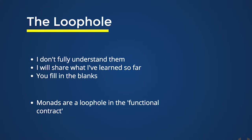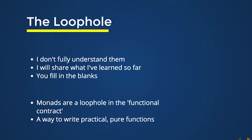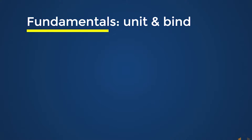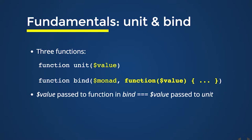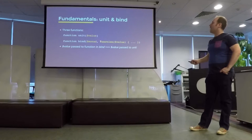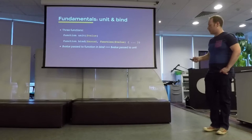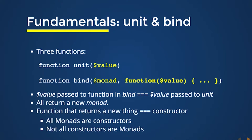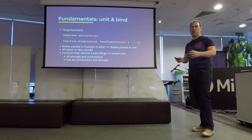It's interesting that I found this loophole because Monads are themselves a loophole in the whole idea of a functional contract. They give you a way to write pure functions that are able to talk to the real world and have some practical benefit. Monads essentially begin with the idea of three fundamental functions: there is a unit function, there is a bind function, and then there is a function that is passed as an argument to bind. If we call the unit function on some value, that creates a Monad. We can then call bind on that Monad with some other function, and all three of these functions return a new Monad. Any function that returns a new thing is generally considered a constructor, so we can reason that all Monads are constructors.